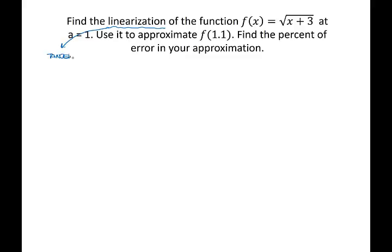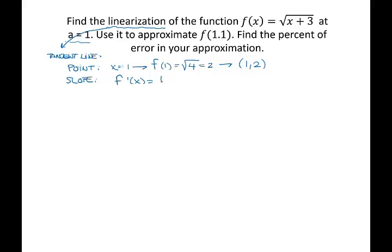We know how to find the equation of the tangent line. We need to figure out the point. They give us x equals 1, so plugging in, f of 1 equals the square root of 4, which is 2. The point of tangency has coordinates (1, 2). To find the slope I need the derivative: x plus 3 to the one half has derivative one half times (x plus 3) to the negative one half, times the derivative of the inside which is just 1.